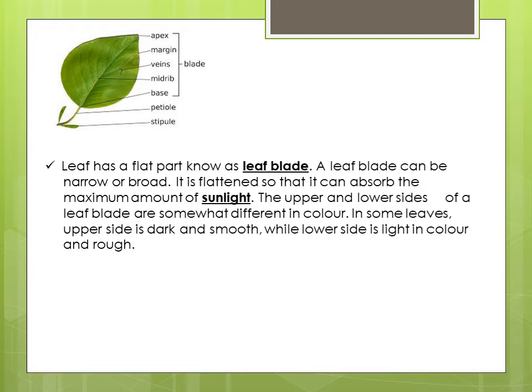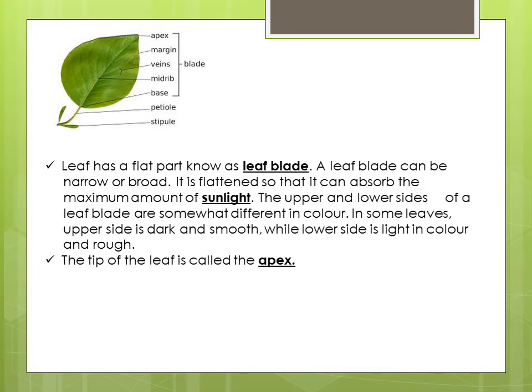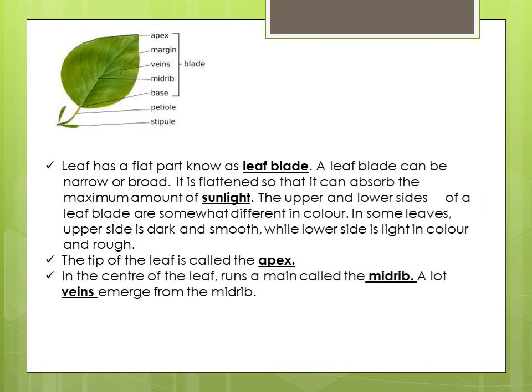The upper and the lower sides of the leaf are somewhat different in color. In some leaves, the upper side is dark and smooth, while the lower side is light in color and rough. The tip of the leaf is called the leaf apex. In the center of the leaf runs a main vein called the midrib. A lot of side veins emerge from the midrib.